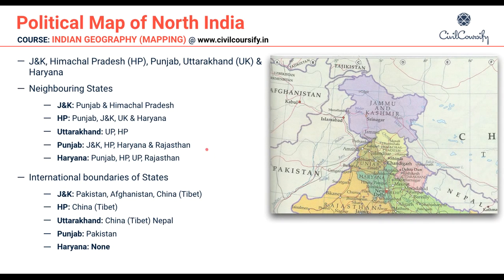In this video we'll cover J&K, Himachal Pradesh, Punjab, Uttarakhand, and Haryana. Let us look at the neighboring states of each one of these states. J&K has Punjab and Himachal Pradesh as its neighboring states. Himachal Pradesh has Punjab, J&K, Uttarakhand, and Haryana. Uttarakhand has UP and Himachal Pradesh.